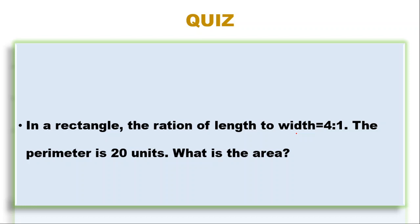Example: In a rectangle, the ratio of length to width is 4 to 1, and the perimeter is 20 units. What is the area? Let the length be 4x and the width be x. The perimeter is the sum of the lengths of all sides, which gives 10x, and since the perimeter equals 20 units, we have 10x equals 20.